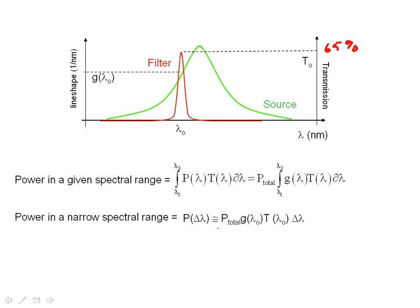And for a narrow band interference filter, you can do an approximation, the approximation to get power over a narrow spectral range we talked about earlier.